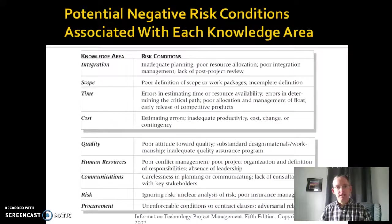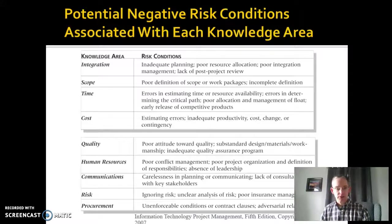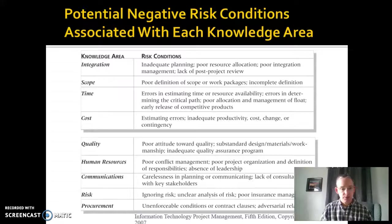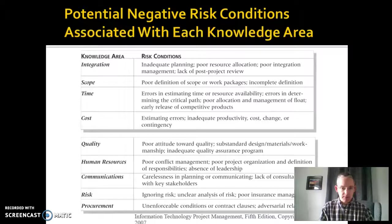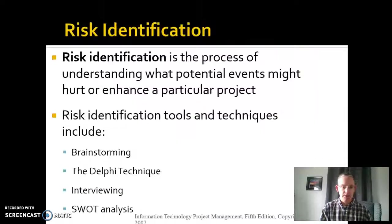The potential negative risk conditions associated with each knowledge area can also change as you go through the project. Think about the different knowledge areas and the risks associated with those. When you're thinking about what you need to monitor and identify as potential risks to track and try to burn down, consider all the different knowledge areas and where you may be impacting those.